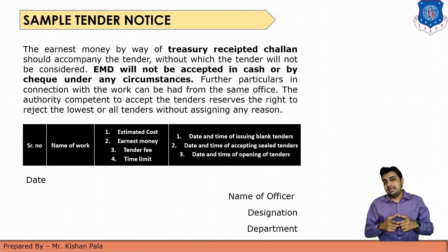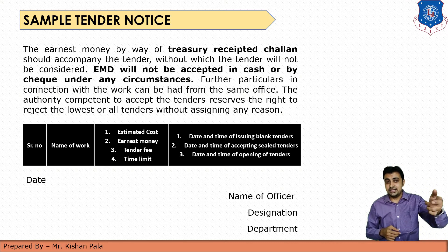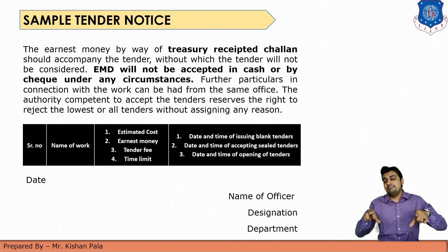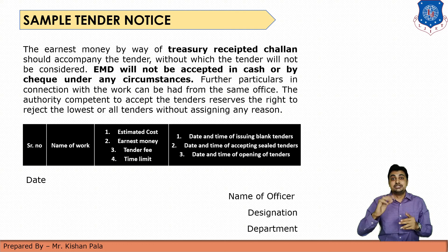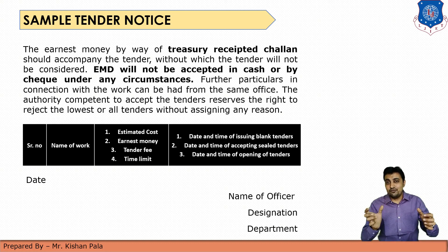In the sample tender notice table, the first column mentions the series number, the second column the name of the work, and the third column the estimated cost of the work, earnest money EMD, the tender fee, and the time limit — the total time duration of the project. The last column shows the date and time of issuing blank tenders, date and time of accepting sealed tenders, date and time of opening of tenders, and in the last segment the date, name of the officer who will accept the work, designation, and department.